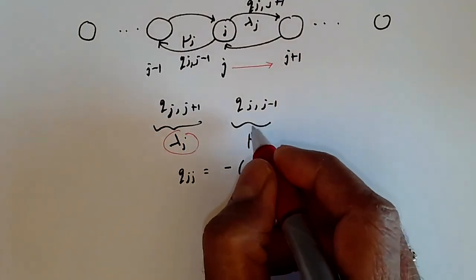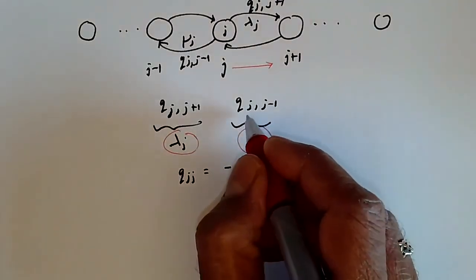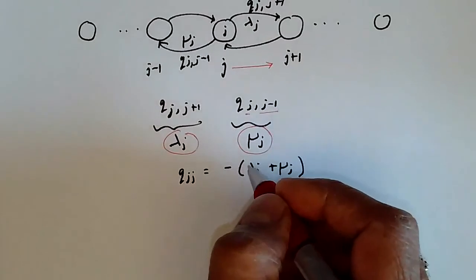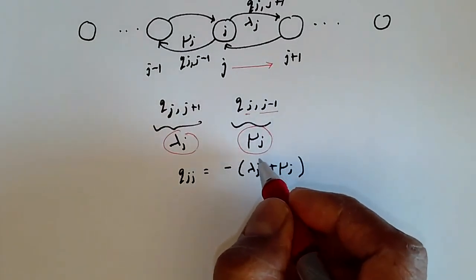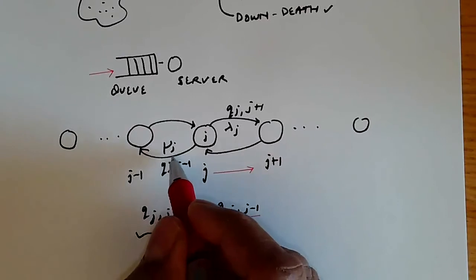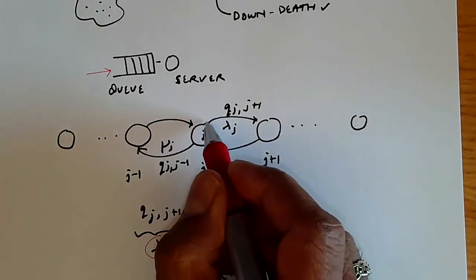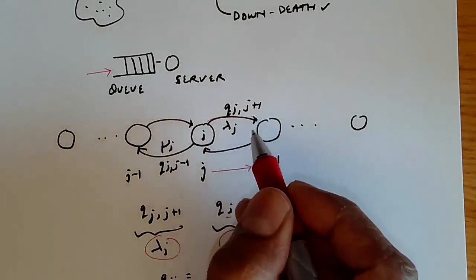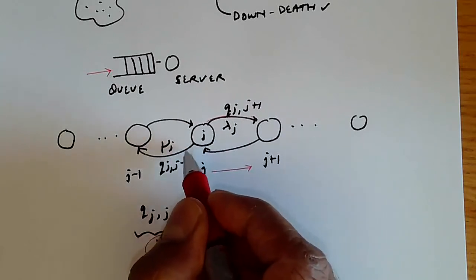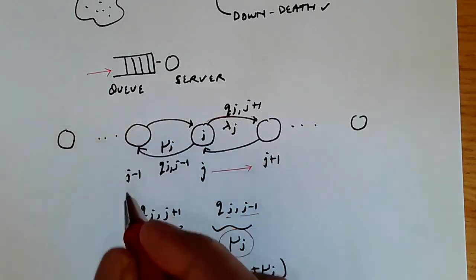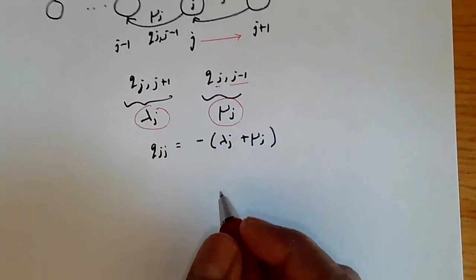And symmetrically, mu j, which is the transition rate from j to j minus 1, is the service rate. In this system, we can show lambda j as this rate of transitioning from a state to the next state. And then mu j is the rate at which you go from j to j minus 1.